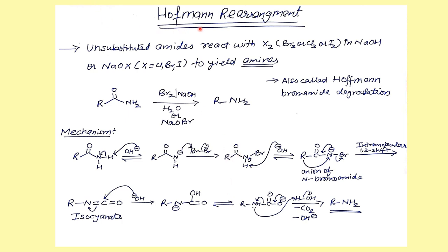Now let's discuss an important name reaction: the Hofmann rearrangement, which you studied in class 12. Amides can be converted to amines when treated with bromine in NaOH (or sodium hypochlorite, sodium hypobromide, or sodium hypoiodide). The key point is that the amide must be unsubstituted on nitrogen — if the amide is substituted, the Hofmann bromamide degradation does not take place. It is called 'degradation' because the carbon chain is reduced by one carbon.